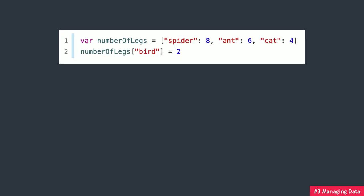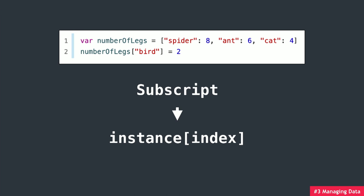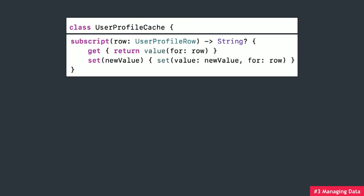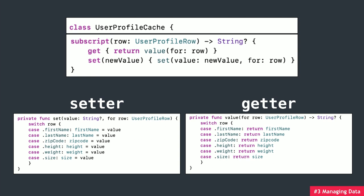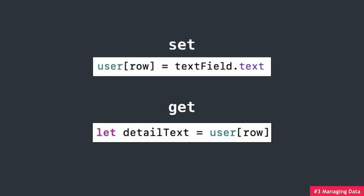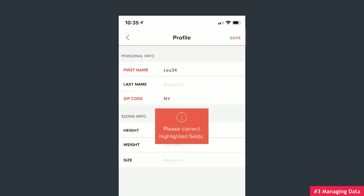So is there a better way? Could I somehow just nicely pass the row to the user cache and let it figure out what property to update? Yes, there is. You know how nice it is that dictionaries and arrays let you access their properties through an index? That's called a subscript — it lets you query instances by typing an index in square brackets, and we can easily define our own. We can make a new subscript for our cache using the UserProfileRow enum as the index.